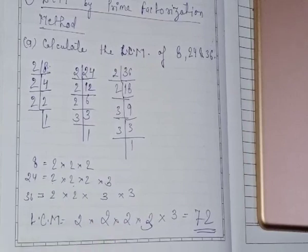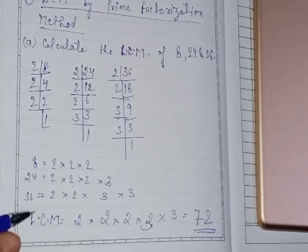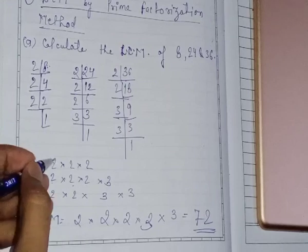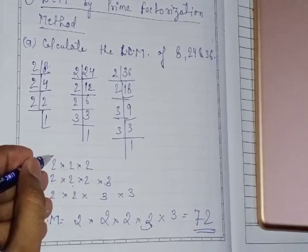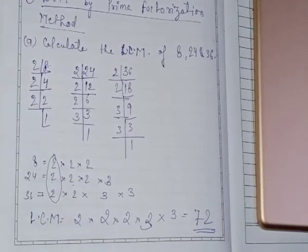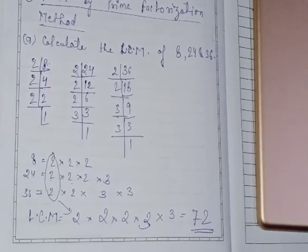Now, what we will do is we will take out the LCM by taking common and individual numbers. The common factors can be taken across all three numbers if possible, or across any two numbers, and the remaining ones individually. For example, this 2 is common in all the numbers.